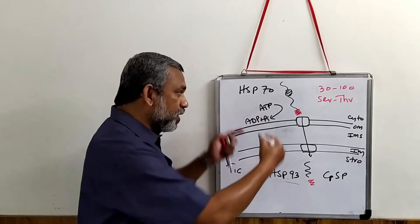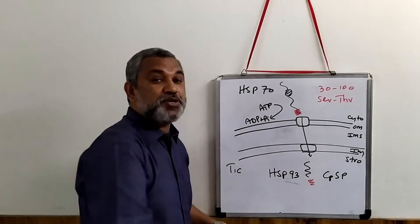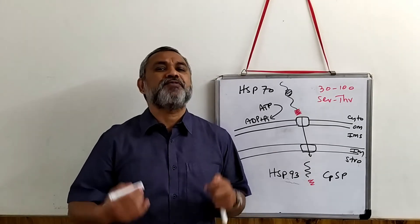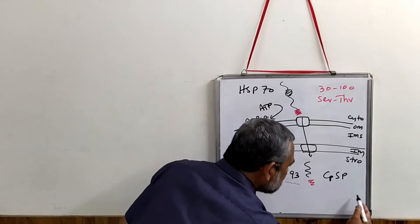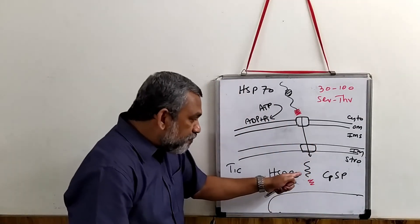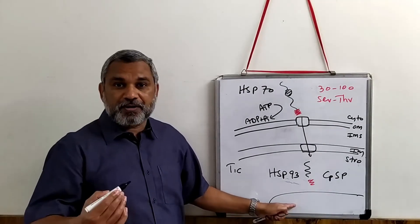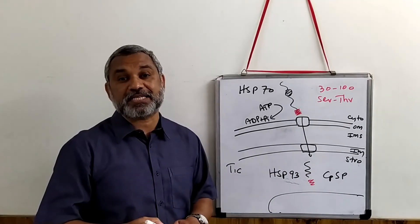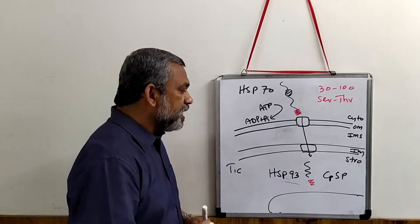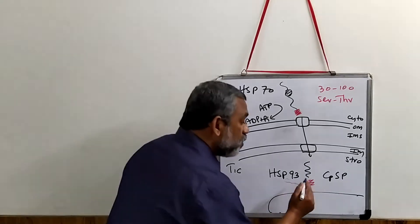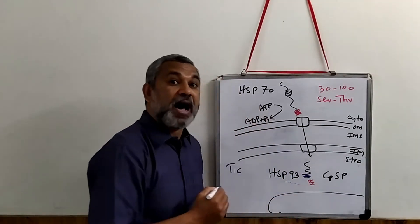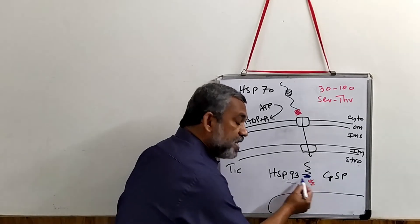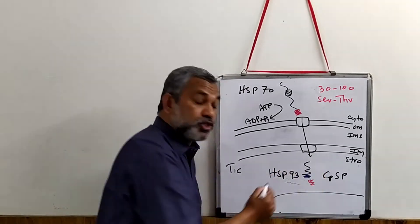We have now brought a protein from the cytosolic side into the stromal side. However, as we saw in the structure of the chloroplast, there is also the thylakoid membrane. If this protein is meant for the lumen or membrane of the thylakoid, it will have an additional signal sequence for the thylakoid. Importantly, this second signal is not removed at the stromal side — it is still retained when the protein is in the stroma.